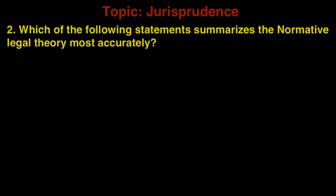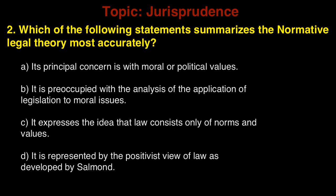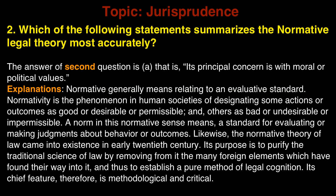Question 2: Which of the following statements summarizes the normative legal theory most accurately? A. Its principal concern is with moral or political values. B. It is preoccupied with the analysis of the application of legislation to moral issues. C. It expresses the idea that law consists only of norms and values. D. It is represented by the positivist view of law as developed by Salmond. The answer is A — its principal concern is with moral or political values.